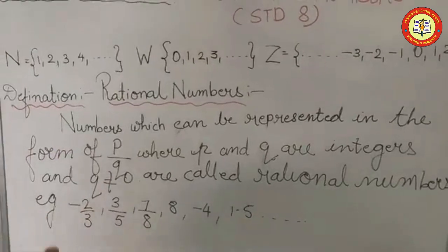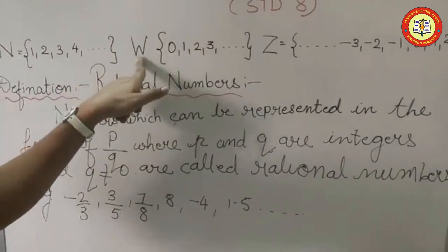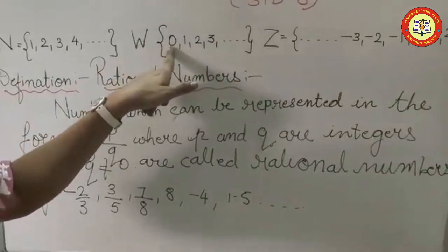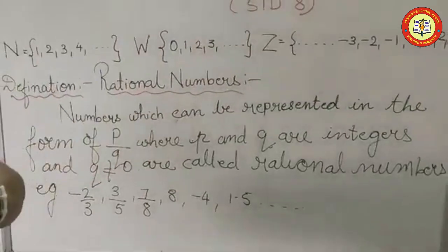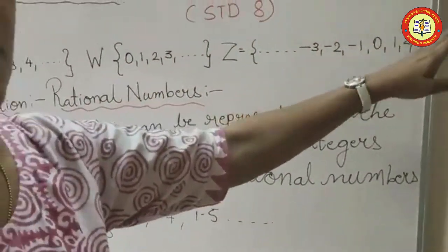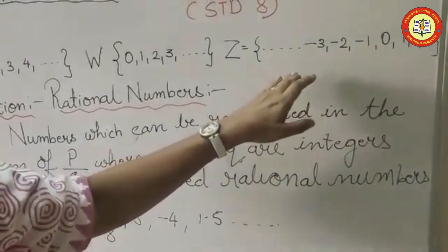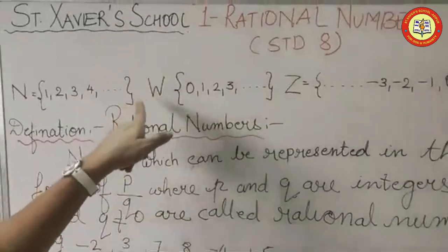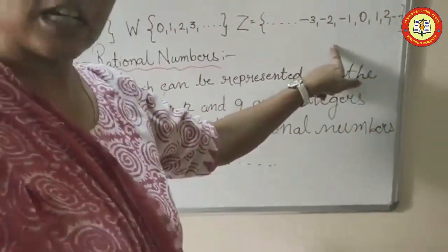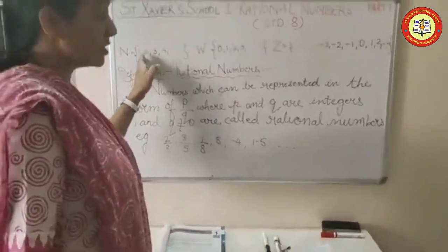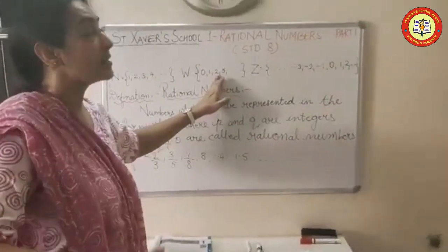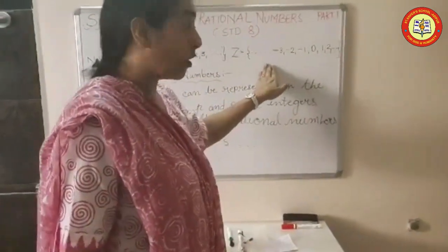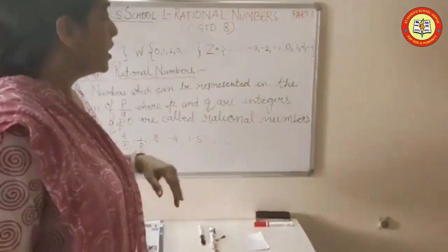Natural numbers along with 0 are called whole numbers, denoted by capital letter W. The set of whole numbers is 0, 1, 2, 3, and so on. Negative numbers, 0, and positive numbers are called integers. All natural numbers are a subset of whole numbers, and all whole numbers are a subset of integers. So whatever property natural numbers have, whole numbers will have that and something more, and similarly for integers.